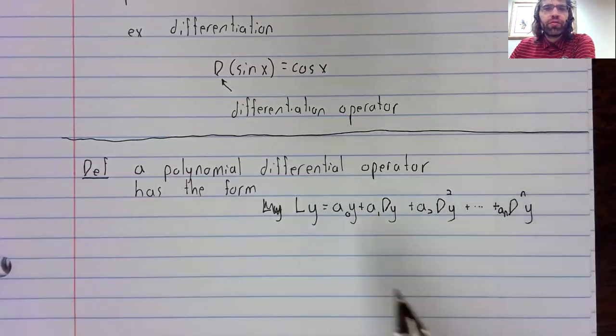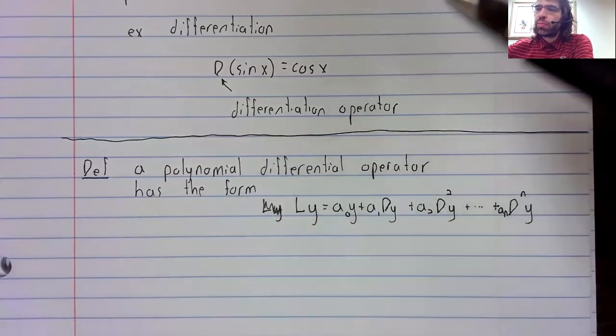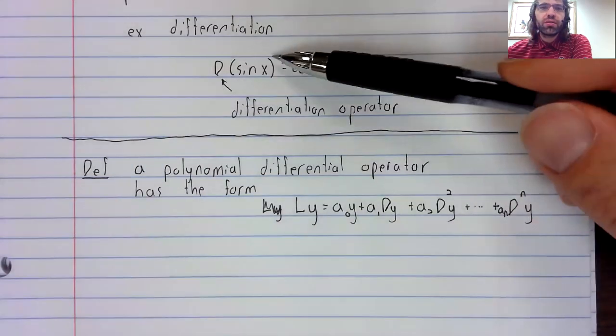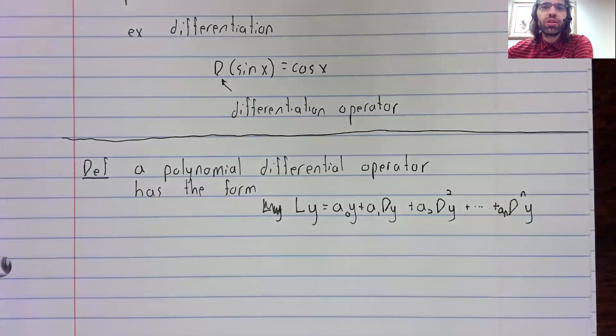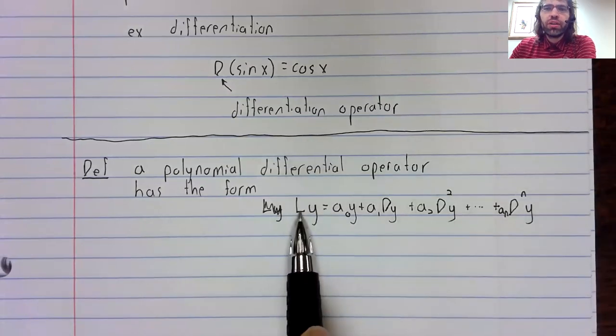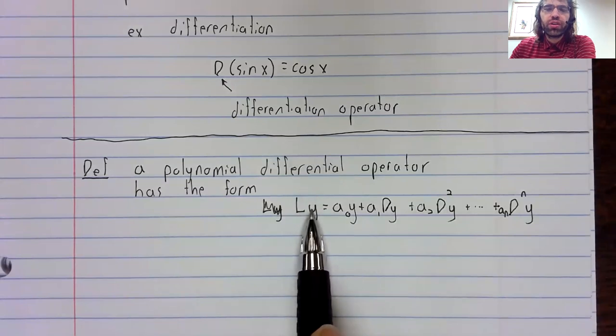So operators are functions, but we don't normally use this parentheses notation. We don't normally use function notation. We normally just write the operator in front of the function without any parentheses or other notation.